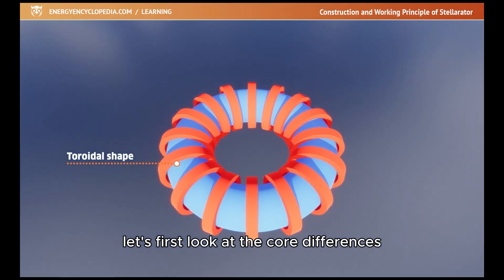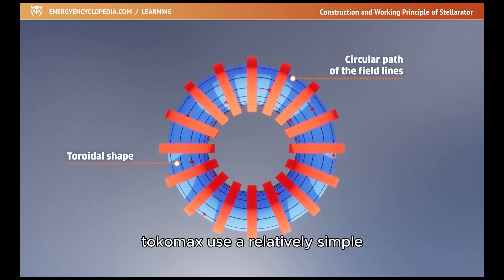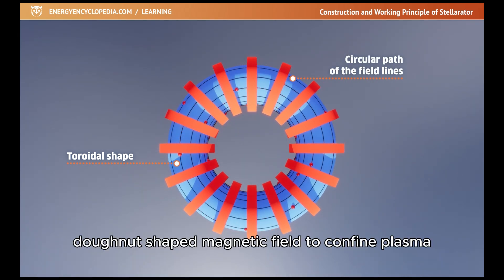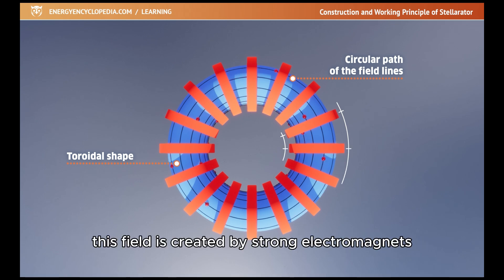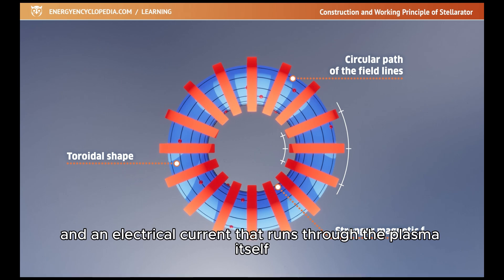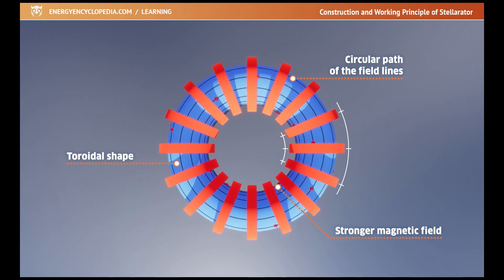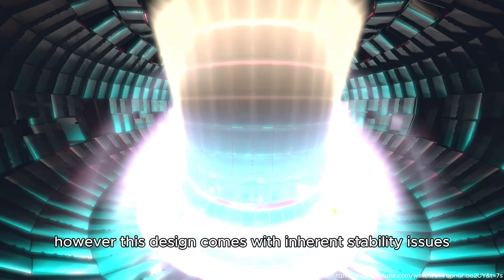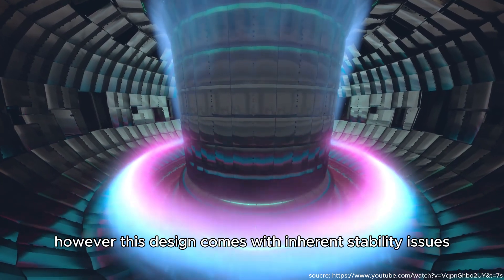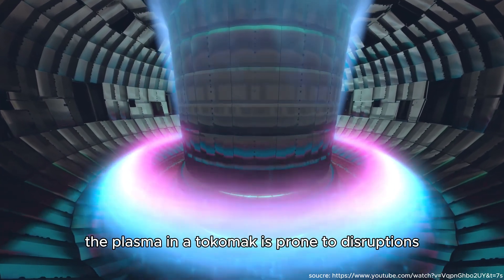Let's first look at the core differences. Tokamaks use a relatively simple donut-shaped magnetic field to confine plasma. This field is created by strong electromagnets and an electrical current that runs through the plasma itself. However, this design comes with inherent stability issues. The plasma in a tokamak is prone to disruptions.